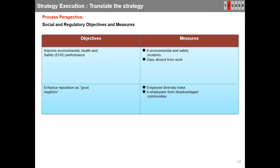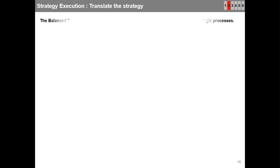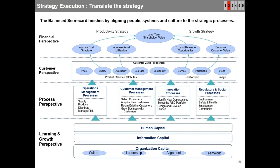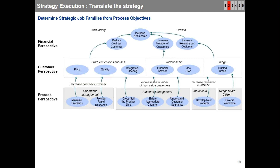Now let us discuss the most important perspective: learning and growth. The balanced scorecard finishes by aligning people, systems, and culture to the strategic processes. We will have objectives covering human capital, information capital, organizational capital, and other enablers. To perform processes and achieve desired results, we need people who are ready to do their jobs and we must prepare the organization to find and retain the right talent at critical jobs.